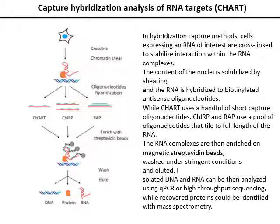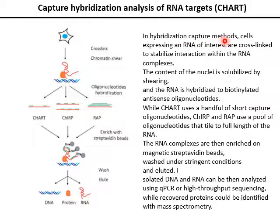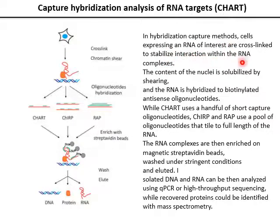The second technique the RNA pulldown assay is based on is CHART — Capture Hybridization Analysis of RNA Targets. This illustration shows the basic steps of this technique. First, cells expressing an RNA of interest are cross-linked to stabilize interactions within the RNA complex. This is similar to ChIRP: the first step in both methods is always cross-linking to stabilize interactions. After cross-linking, the nuclear content is solubilized by shearing.